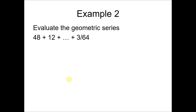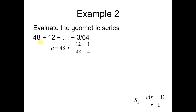Example 2: Evaluate the geometric series. The first term is 48 and the common ratio r is 12 over 48, which equals 1/4. Since 1/4 is less than 1, we use the first formula with 1 minus r to the power of n. However, we don't know the value of n, so we need to find it using the last term.